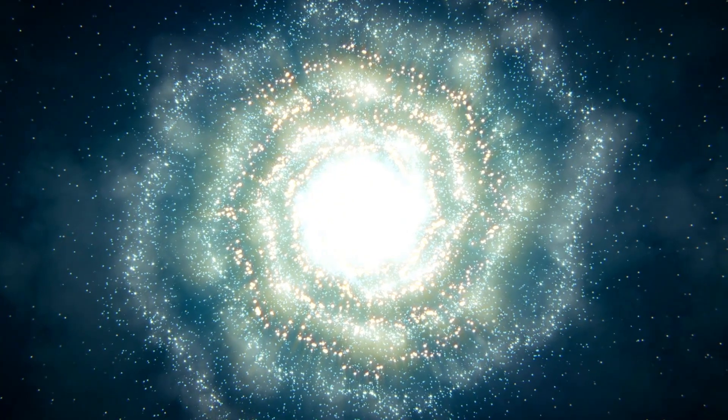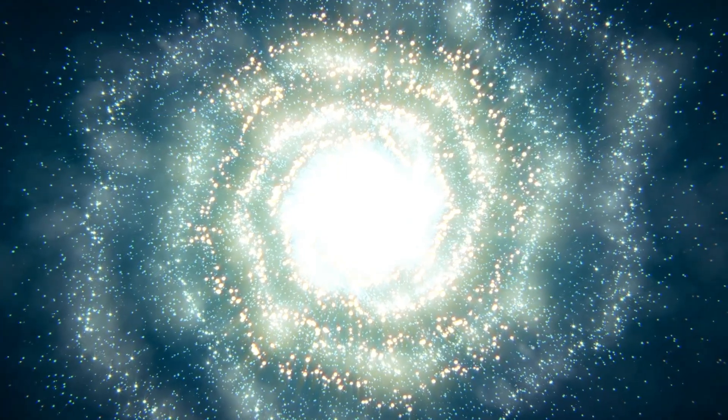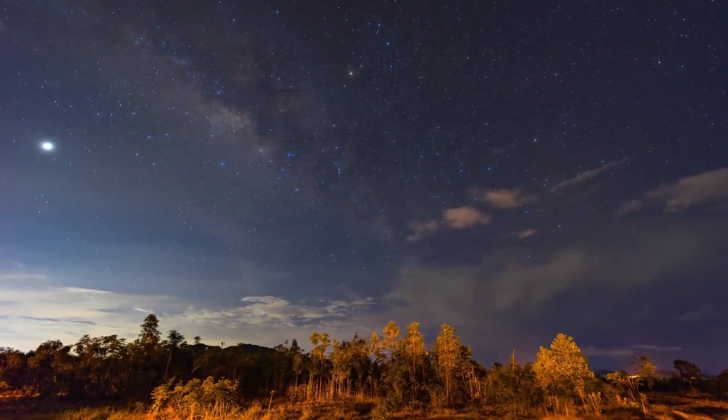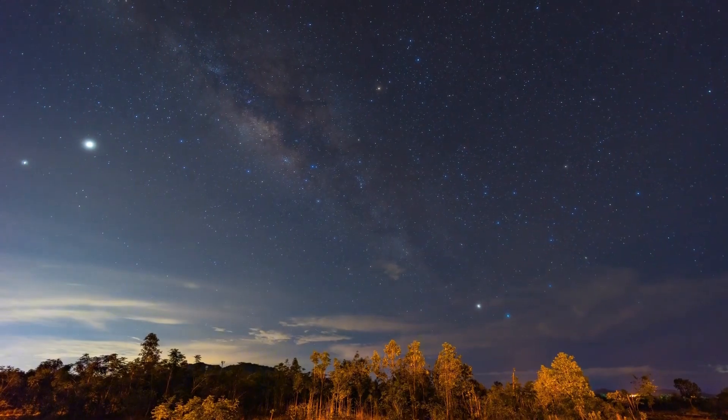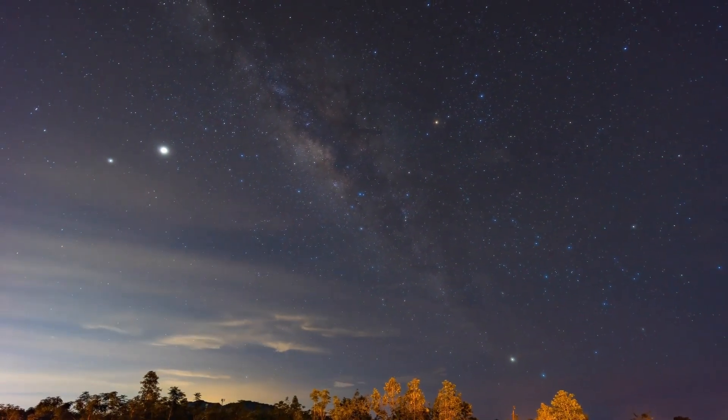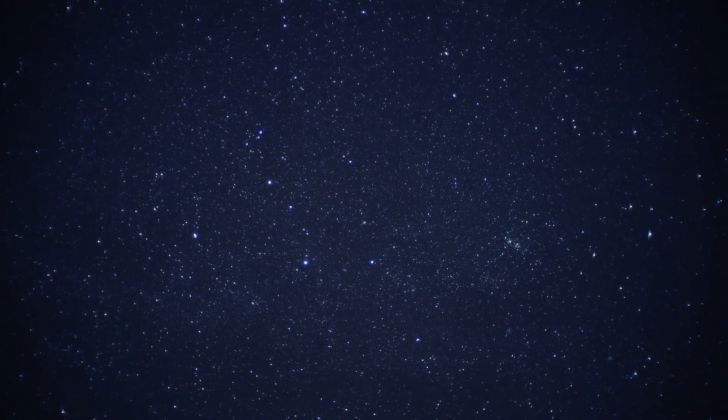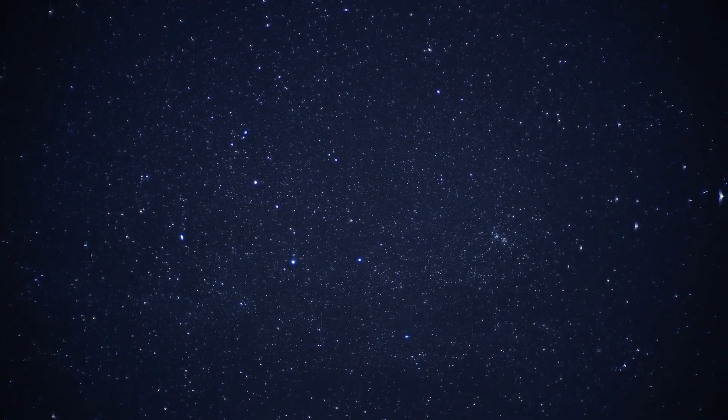However, the solar system's position and direction within the new galaxy could be essentially modified. This shift could prompt changes in the galaxy's circle and environment, potentially influencing the habitability of our planet. The blending system will additionally have significant ramifications for the very huge black holes at the focuses of the two galaxies. The Milky Way's black hole, Sagittarius A asterisk, and Andromeda's black hole will ultimately converge to frame a much bigger black hole. This consolidation will be joined by the arrival of huge measures of energy as gravitational waves and radiation.